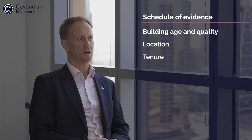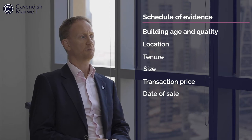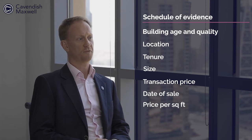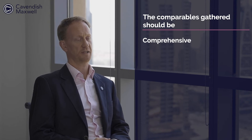The schedule of evidence includes location, tenure, size, transaction price, date of sale, and price per square foot, all of which can be used for comparison with other similar properties. The comparables gathered should be comprehensive — that is to say, there should be several comparables rather than a single transaction or event.